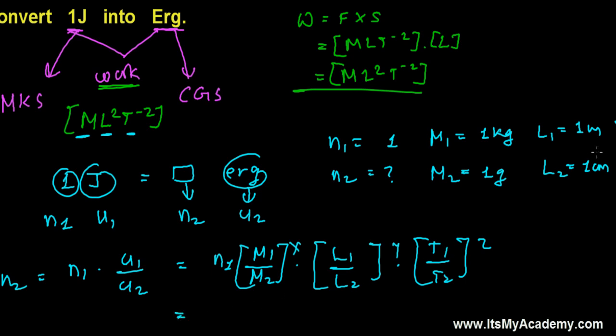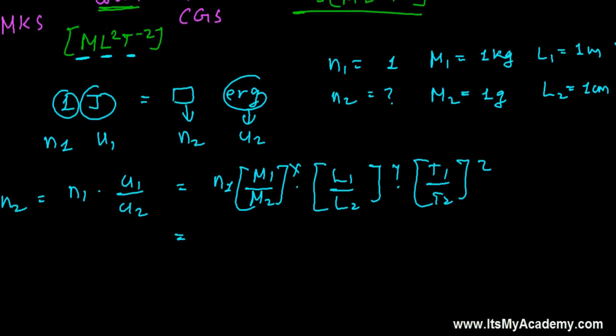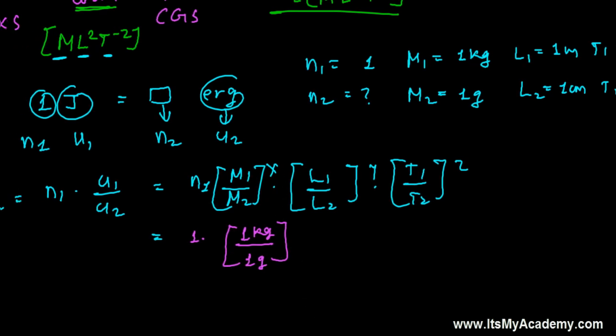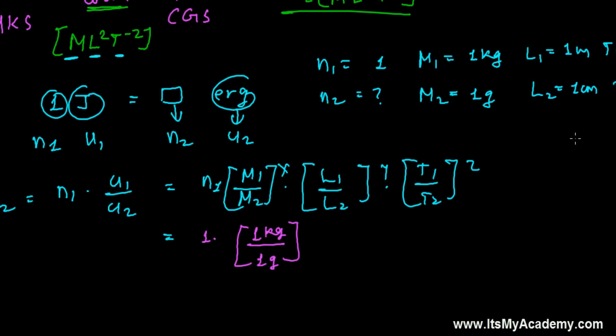So let's put all the values on and get the solution of n₂. All right and that's n₁, n₁ as you know that's one joule, M₁ as I told you that's one kg divided by M₂ that's one gram and the power is x. So power of x means power of mass. So what is the dimension of mass? That's one. So that's one here.